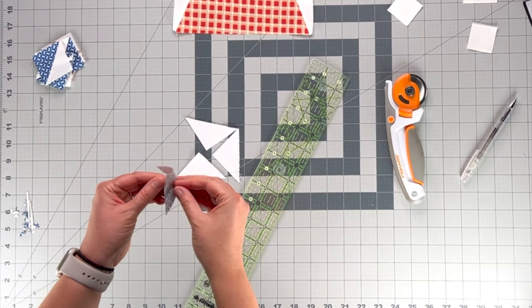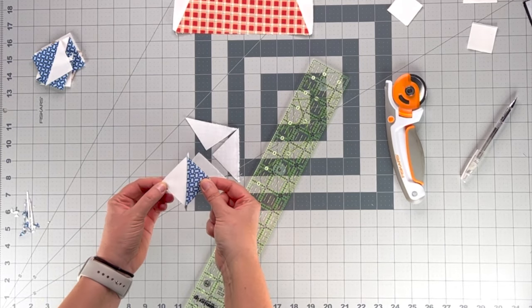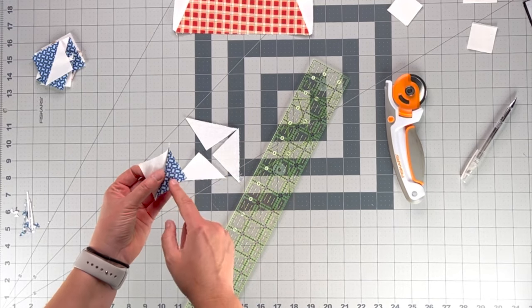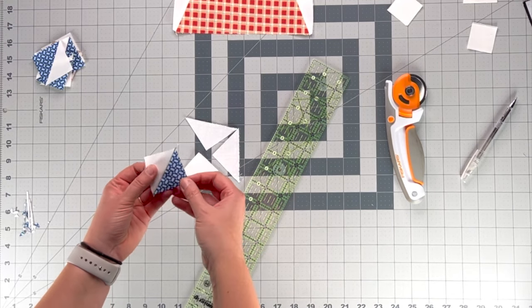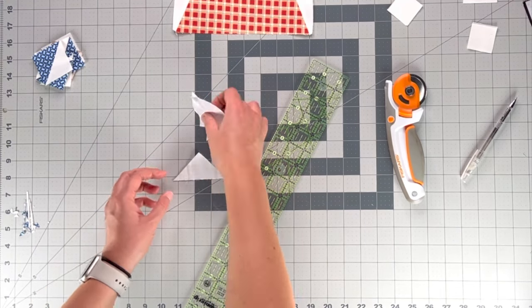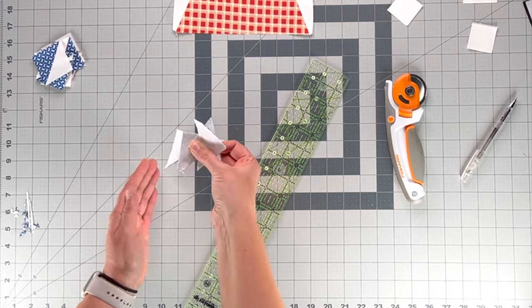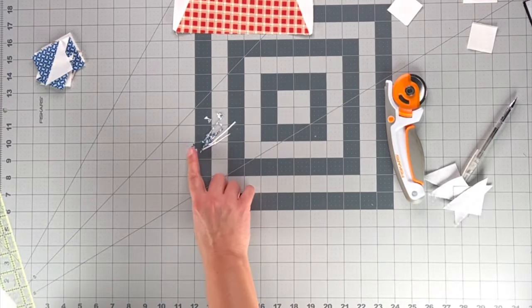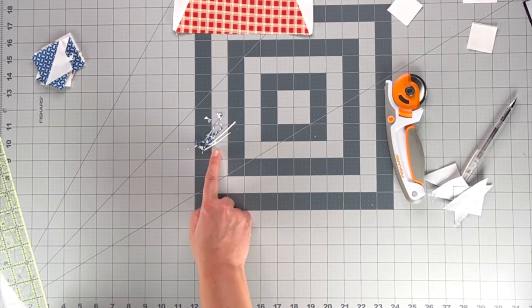And then all of a sudden you've got four half square triangles, one for each point of your friendship star. These will need to be trimmed down to make sure that they're the exact size. This makes them just a slight bit bigger.